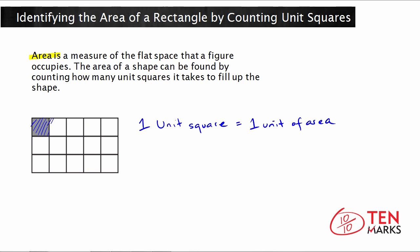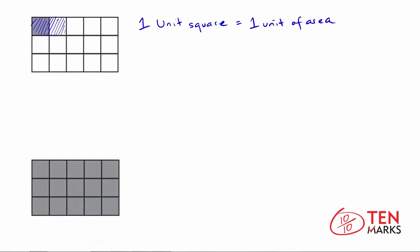If, let's say, two of these were filled up, so I'm going to shade in two of them, that means we have two units of area. Now let's figure out the area of this entire rectangle. So notice here, the entire rectangle is filled in. And all the unit squares are colored in gray. So you can find the area by counting the number of unit squares that fit inside the large rectangle. And let's count them.